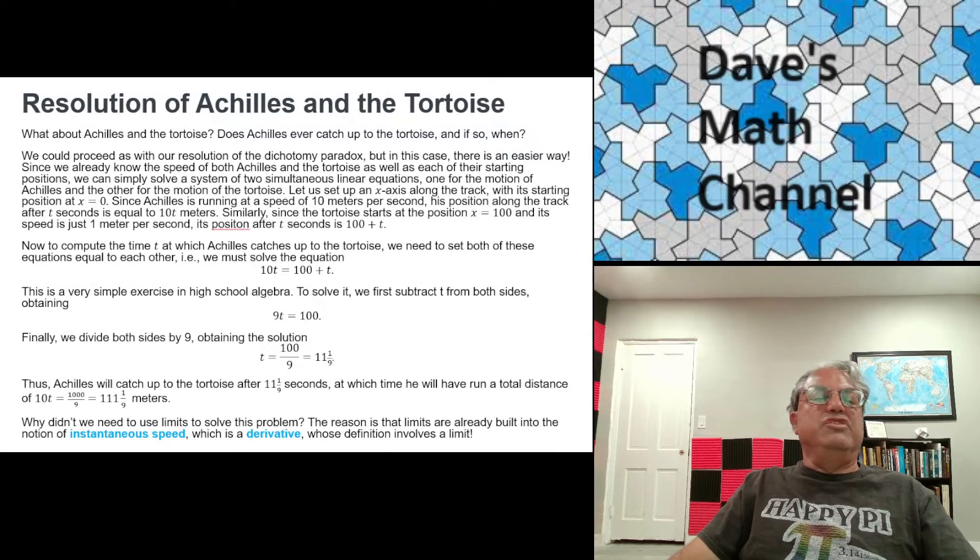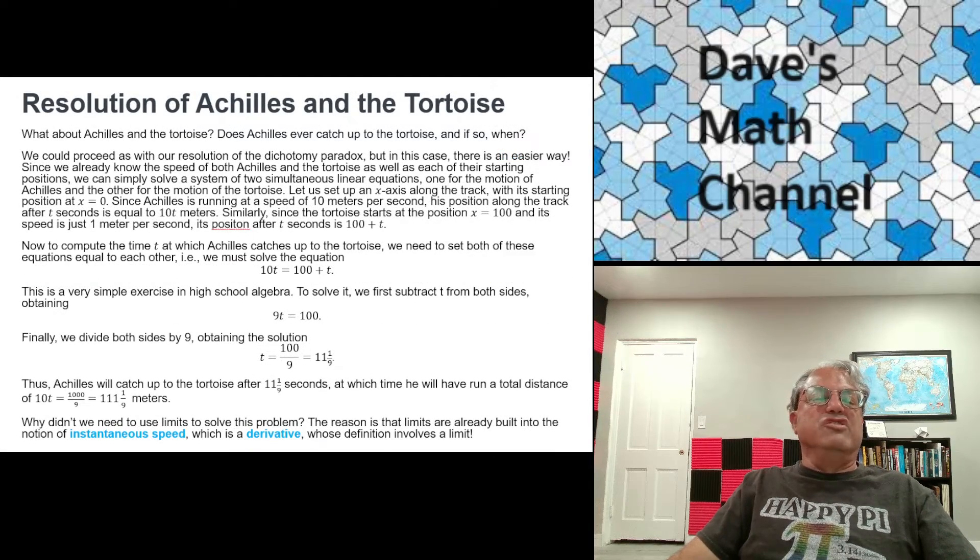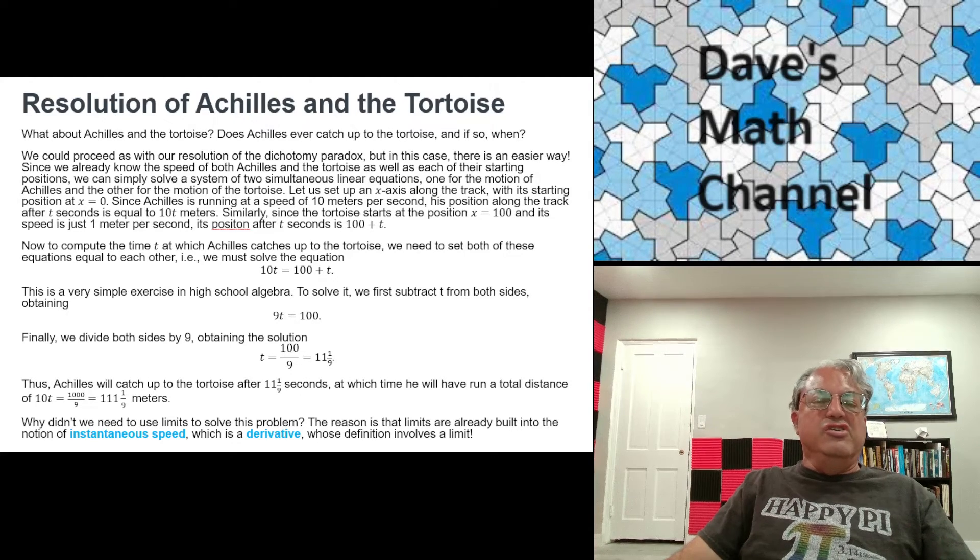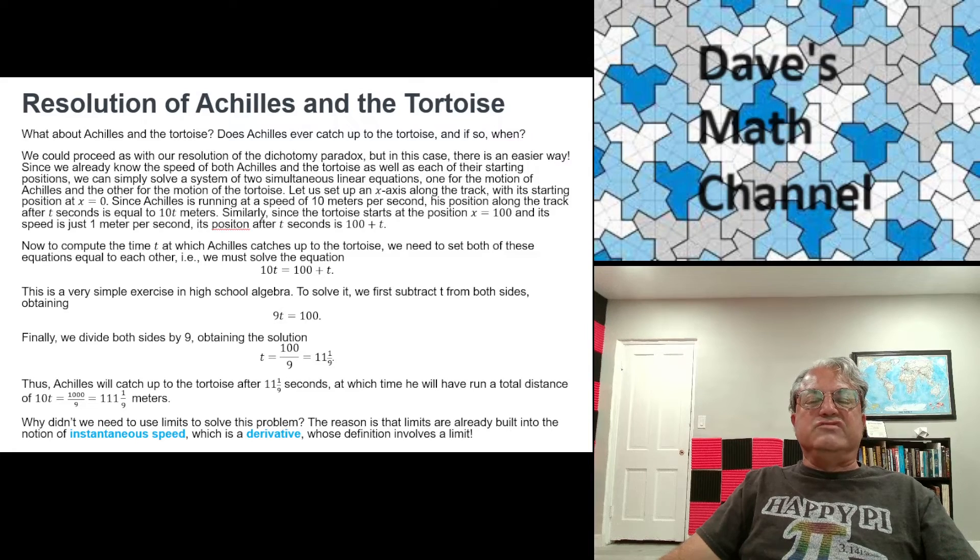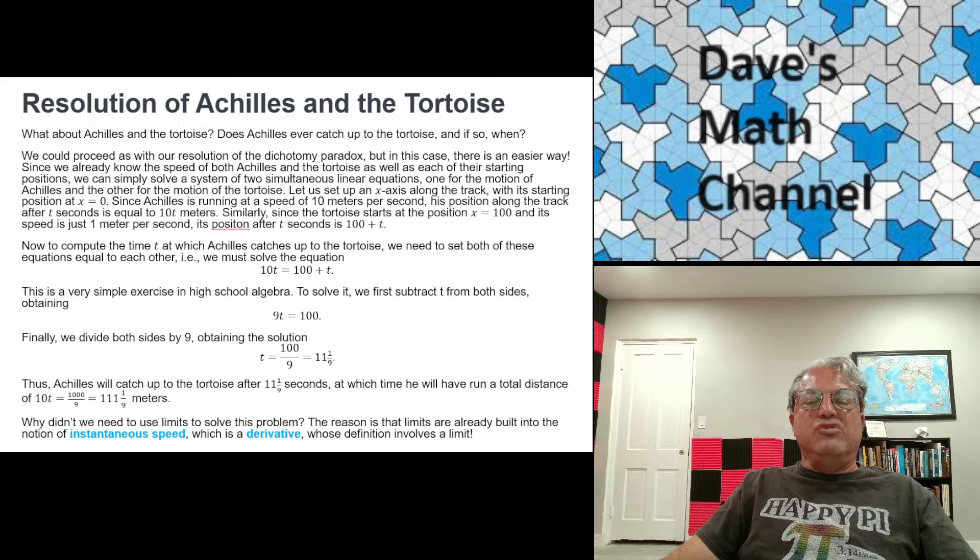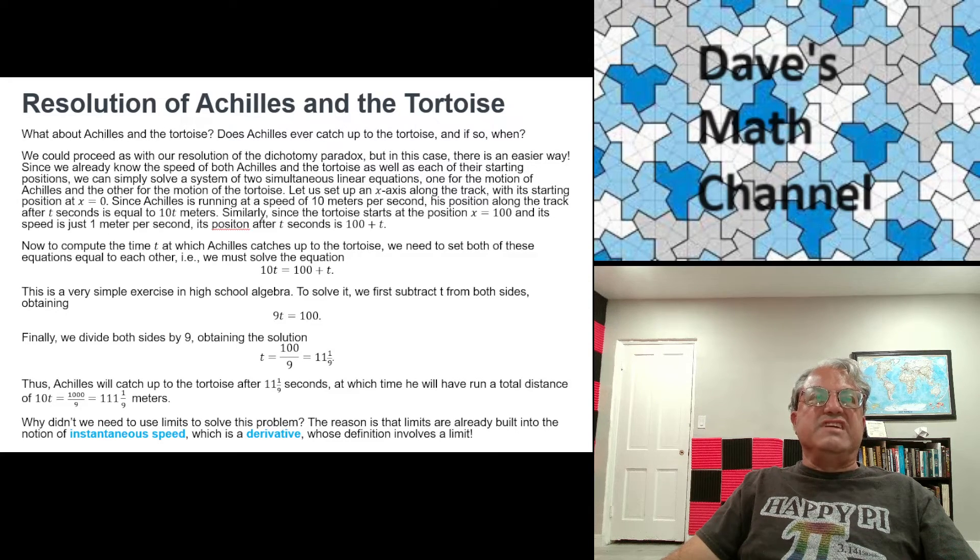And we can also resolve the paradox of Achilles and the tortoise. And for this one, we don't even really have to use limits. We could just use the notion of speed, instantaneous speed if you like. And I think we all know what speed means. Just because, I mean, we all know we drive, and your speedometer tells us how fast we're driving. So if we're driving 60 miles an hour, we don't have to drive for a whole hour to know that we're driving 60 miles an hour. We just read what it says on the speedometer. The speedometer is measuring our instantaneous speed. And that actually is a limit. I'm not going to get into that right now. But it's easy. If the speed's constant, then we don't have to worry too much.